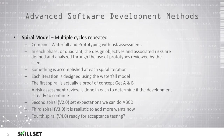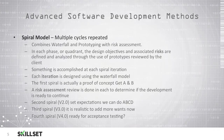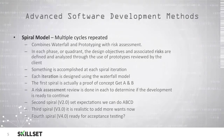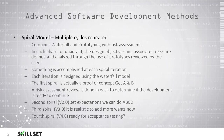The spiral model is a model with multiple cycles that are repeated. It's a combination of the waterfall and prototyping models with an additional risk assessment. In each phase, also known as a quadrant, the design objectives and the associated risks are defined and analyzed through the use of prototypes that the client gets to review. During each spiral iteration, something is accomplished. Each iteration is designed using the waterfall model, and the first spiral is actually a proof of concept. You'll then do a risk assessment after each step to determine if the development is ready to continue.